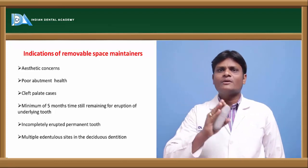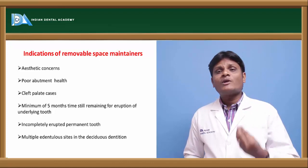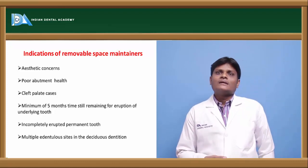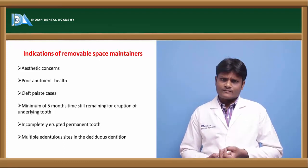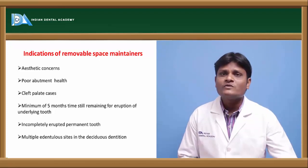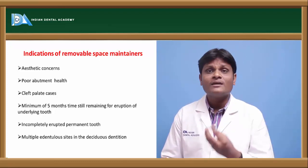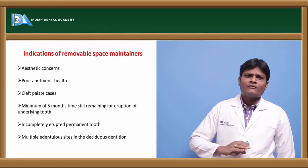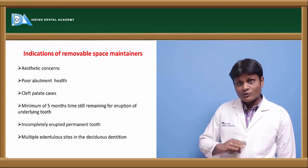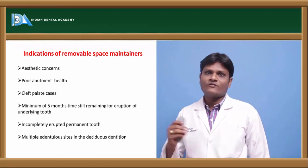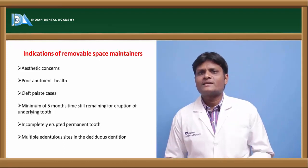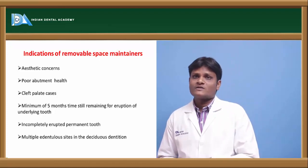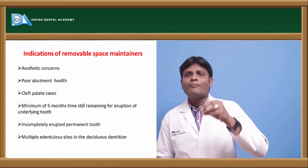Removable space maintainers are indicated only in those cases where at least five months of time remain until eruption of the underlying permanent tooth. When a permanent tooth is not completely erupted and much time remains, a removable functional space maintainer with a replacement tooth can be used until the adjacent permanent tooth erupts. In cases of multiple missing or exfoliated deciduous teeth, an acrylic partial denture type of space maintainer is preferred to restore form and function while maintaining the space for eruption of succedaneous permanent teeth.